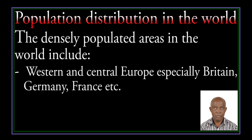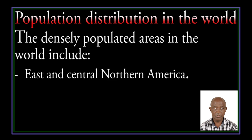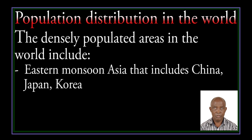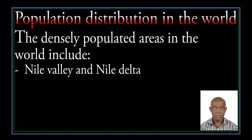Densely populated areas in the world include Western and Central Europe, especially Britain, Germany, France, and so on; East and Central Northern America; the Indian subcontinent comprising India, Pakistan, Bangladesh, and Sri Lanka; the Eastern Monsoon Asia, including China, Japan, and Korea; and the Nile Valley and Nile Delta.